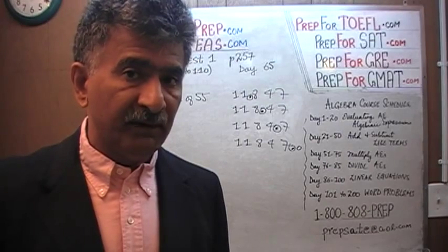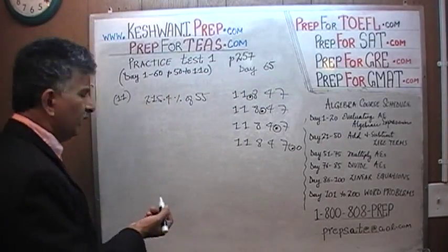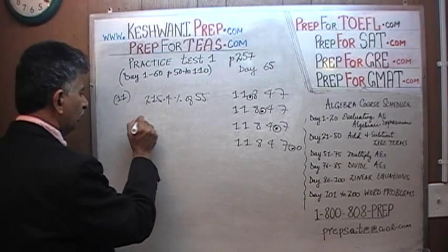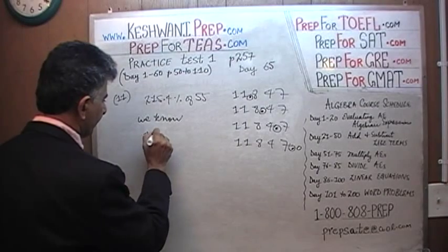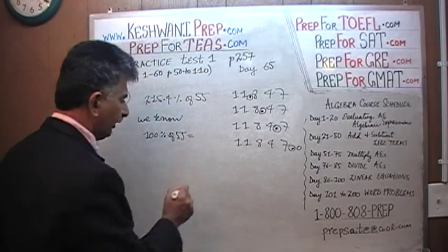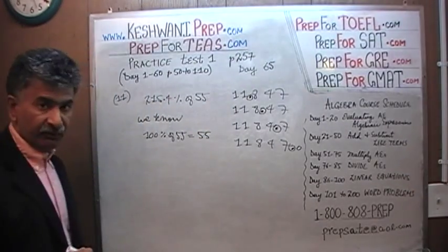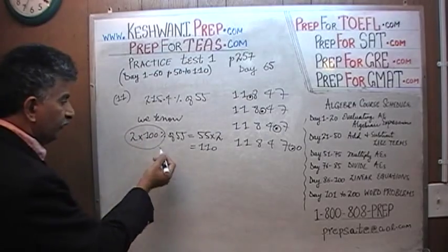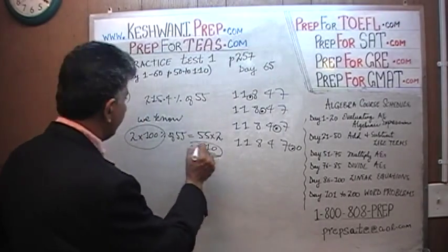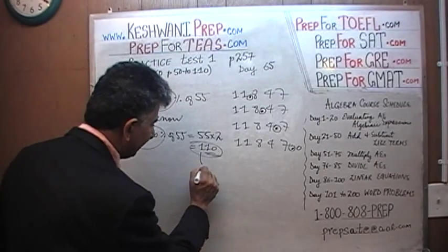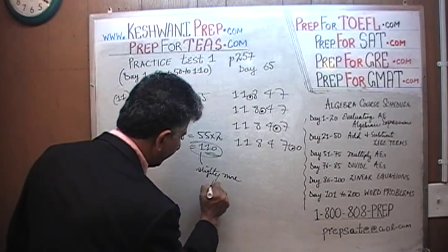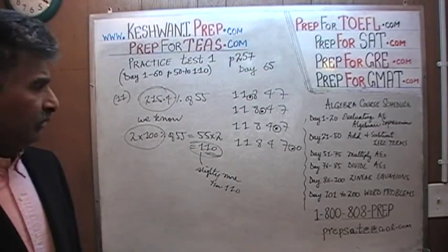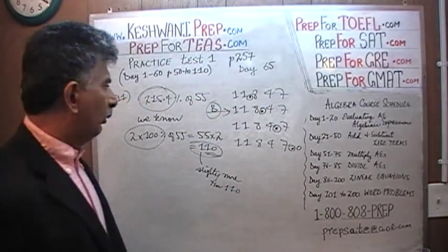Don't multiply it out — that will take too much time. We know 100% of 55 is 55. So 200% of 55 should be twice as much, which is 110. They're looking for 215%, which is going to be slightly more than 110. Just pick the answer choice that is slightly more than 110. There's only one answer choice that's slightly more than 110, and that answer choice is B. 118 is the answer.